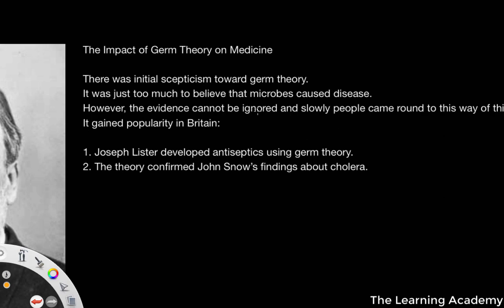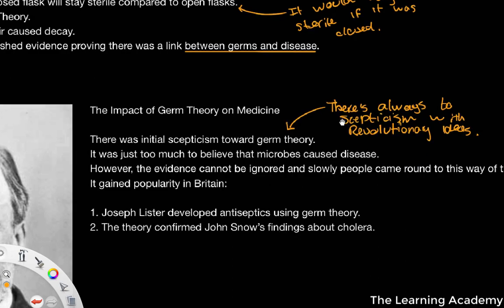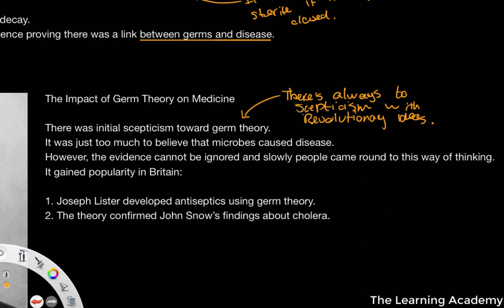Obviously, just like with all of these theories at the start, there was skepticism — there's always skepticism when it comes to revolutionary ideas. And this was a revolutionary idea because the theory of spontaneous generation had existed for years and years. It was almost general practice, the standard idea. And Louis Pasteur just debunked it completely and made the link between disease and germs. For some, it was too much to believe that these little microbes caused disease. But despite initial criticism in the UK and Britain at the time, people slowly came around to the idea that germ theory was correct.